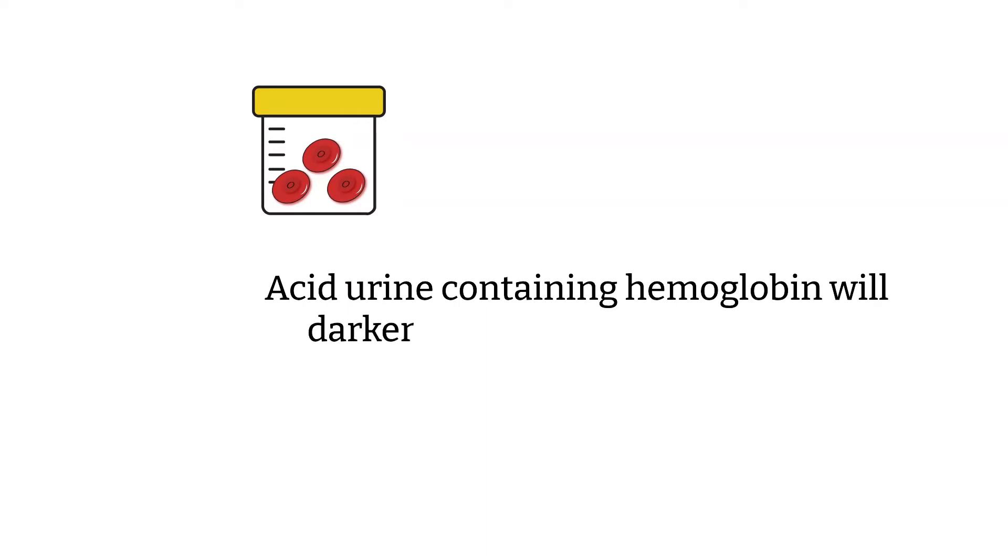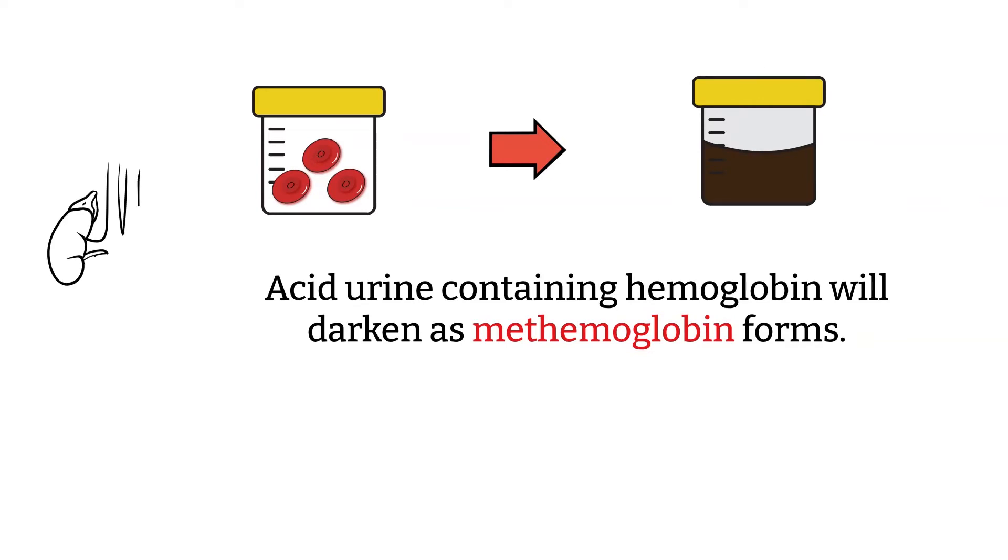For instance, acid urine which contains hemoglobin will darken as the contact time increases due to the formation of methemoglobin. This contact time includes the time urine inside the body waiting to be collected and when the specimen is already collected. You see, another reason why specimens should be sent to the laboratory as soon as possible for the most accurate test results.